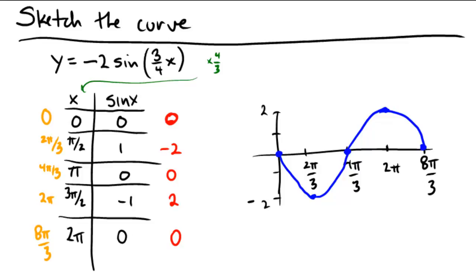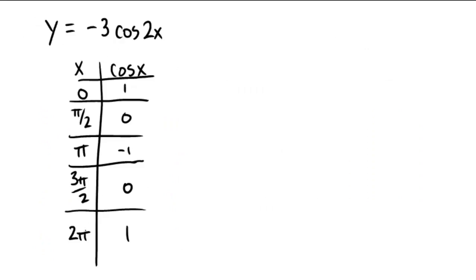Why don't you pause the video and see if you can do this next one on your own: negative 3 cosine 2x. Assuming you gave this a good shot, what happens to my y-factors? My vertical stretch is a factor of negative 3, so that means multiply all y-values by negative 3. That's all of my effects on the y.